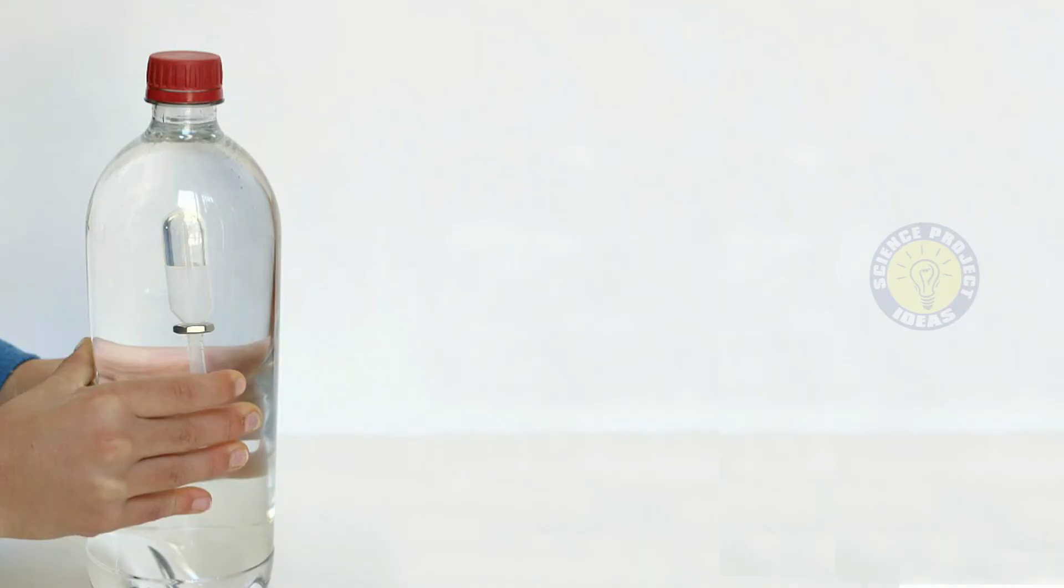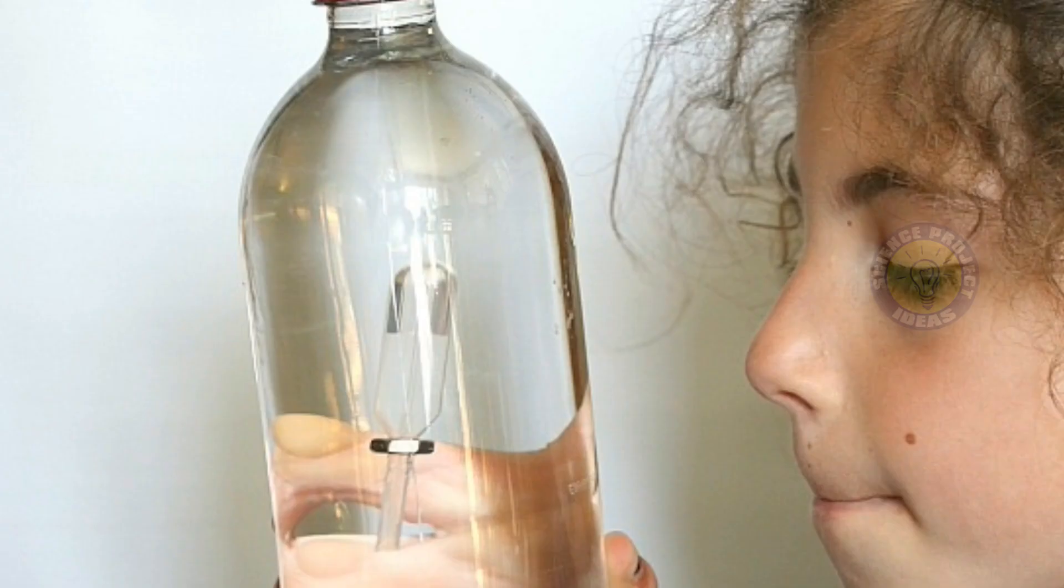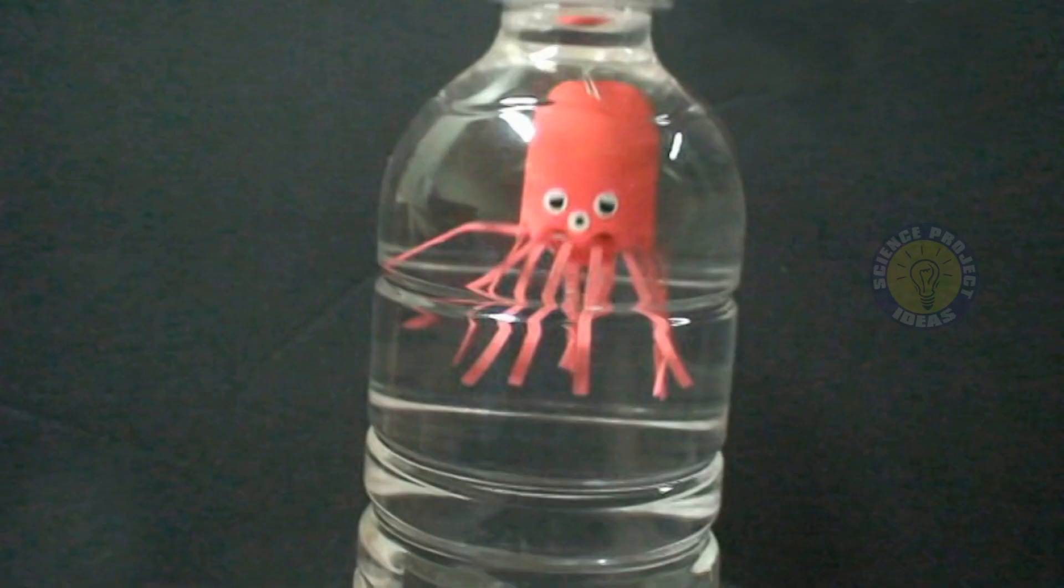When testing out your squiddy Cartesian diver for correct density as described in the directions above, it can be harder to fill because of the legs. We used another pipette to squeeze water into our squiddy and then tested him in a cup of water before putting him in the bottle. Squeeze and release your bottle to make your squiddy go up and down.